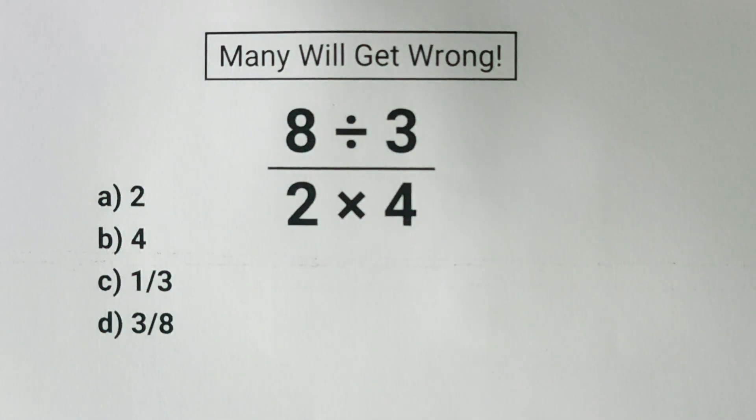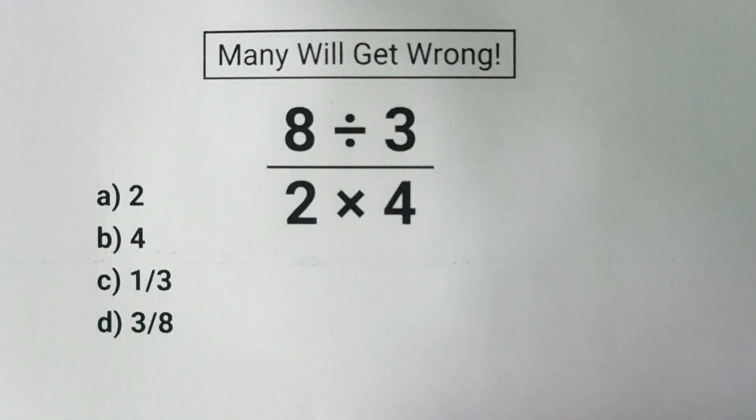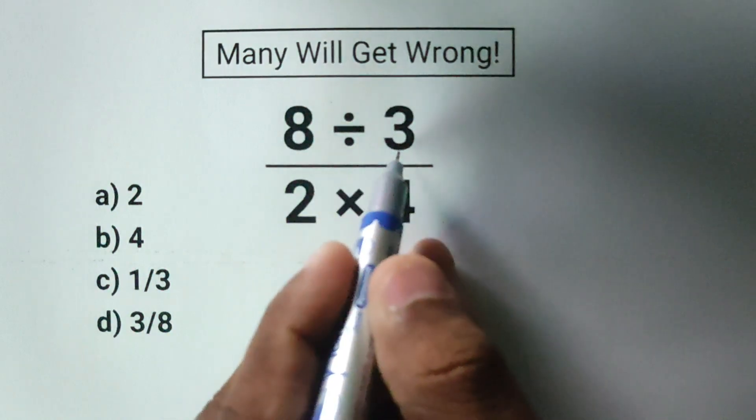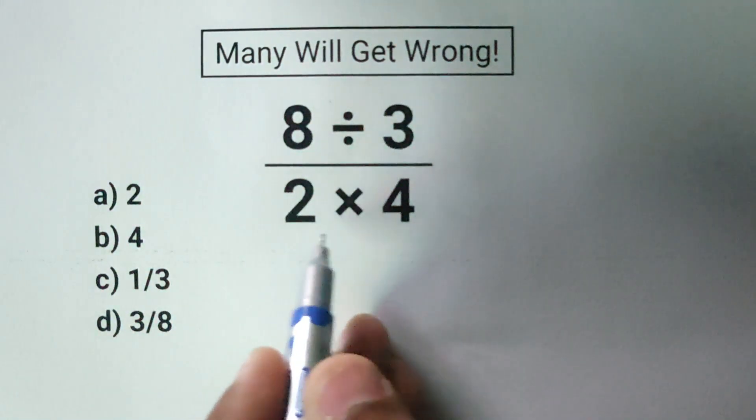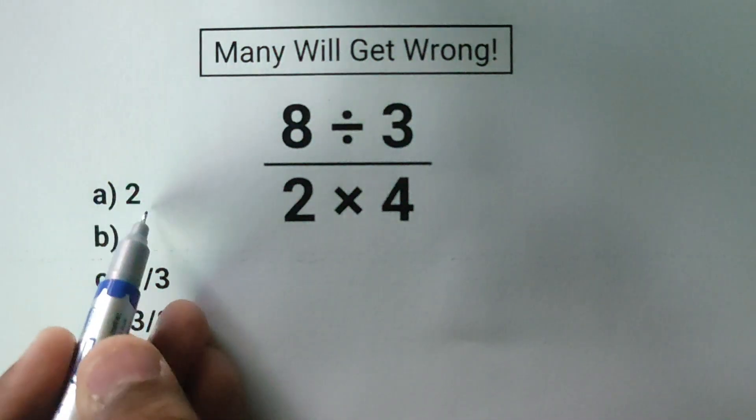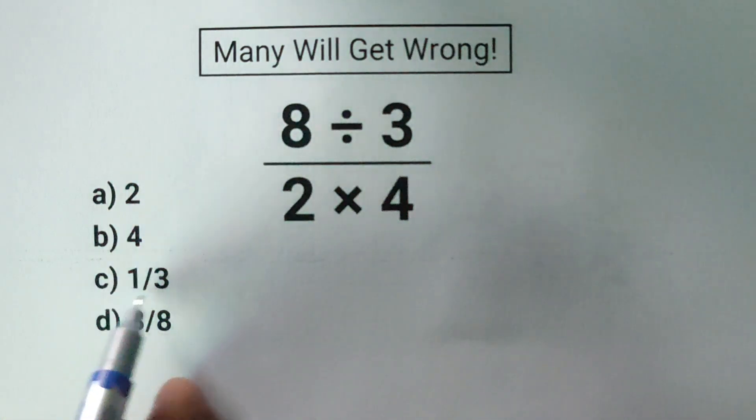Hello everyone, ready for a quick math challenge? Let's see if you can get this one right. The problem is 8 divided by 3, all divided by 2 times 4. Your answer choices are: a) 2, b) 4, c) 1 over 3, and d) 3/8.